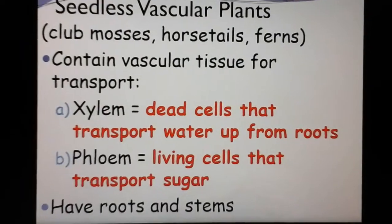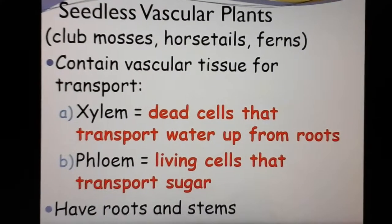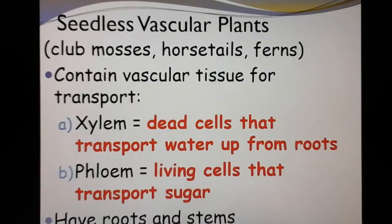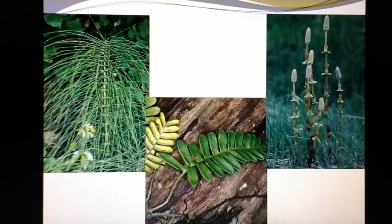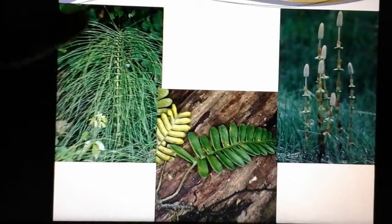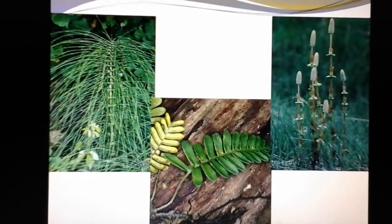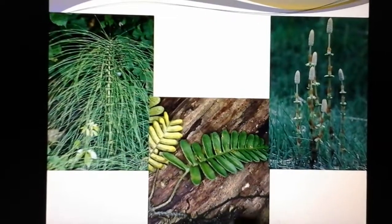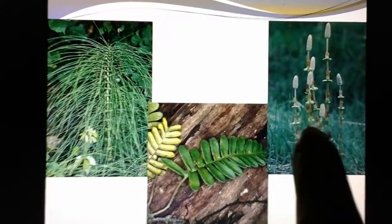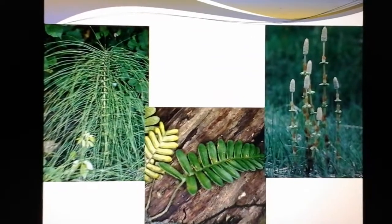Ferns do have roots and stems — we'll talk about what it means to be a root and a stem later. The horsetail is used as a broom in some cultures. Here's the fern like you're used to, and the club moss, just so you can see what they look like.